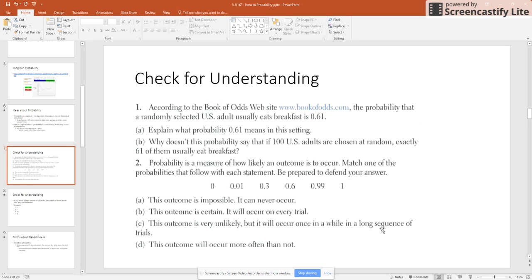So let's look at some examples here. So according to the book of odds website, the probability that a randomly selected U.S. adult usually eats breakfast is 0.61. So part A, explain what probability 0.61 means in this setting.